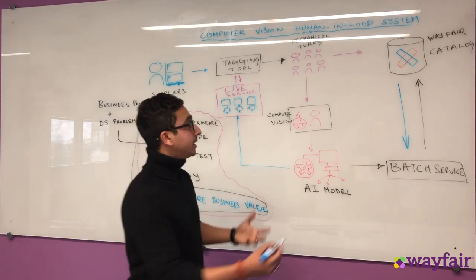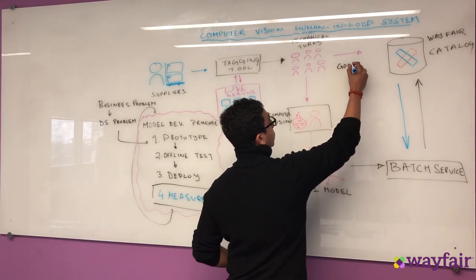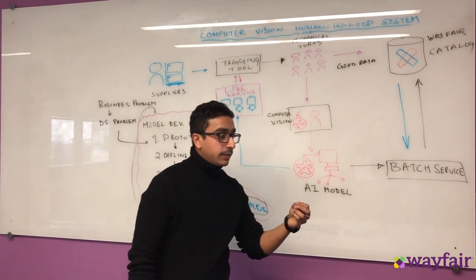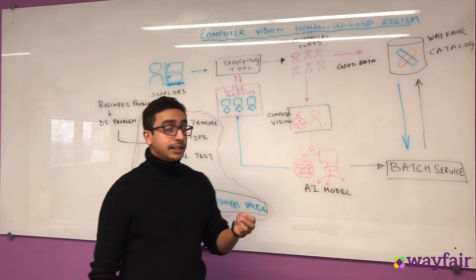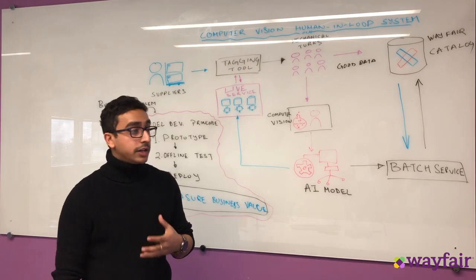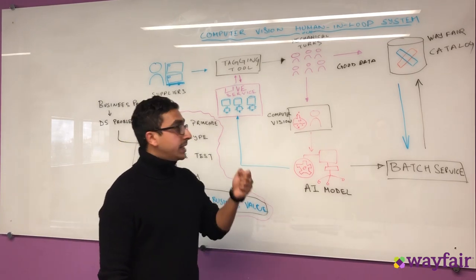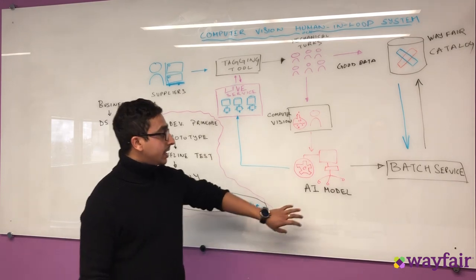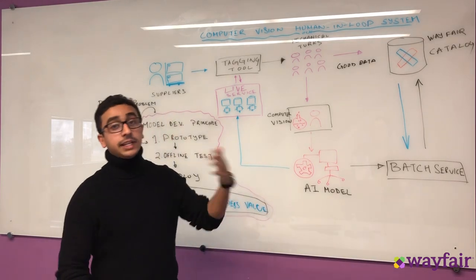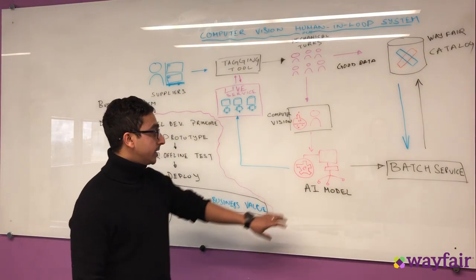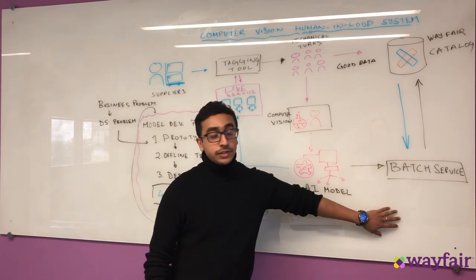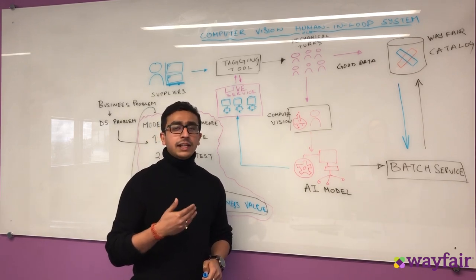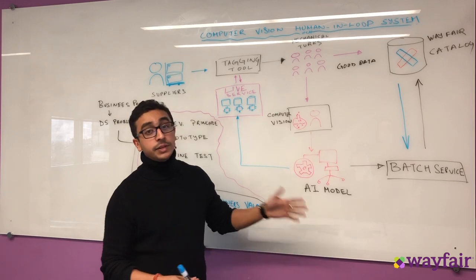Once the workers correct the tags, we have good data at that point, which we put into our Wayfair catalog. The corrections that workers make for missed tags are very useful information for us to iterate on the model and understand where the gaps are. We take that data, analyze the gaps, and create an improved AI model that is better than the last. Once we have that, we deploy it into a live service. We also have a batch service that takes this improved model and backfills images that are currently mistagged, because we know the new model is better than what we had before.